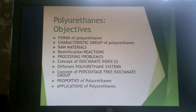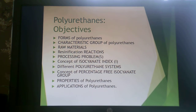First, we're going to state some objectives. We're going to talk about the forms of polyurethanes, the characteristic group of a polyurethane — which is, spoiler, a urethane — raw materials, resinification or polymerization reactions, processing challenges, the concept of isocyanate index, different polyurethane systems, the concept of free isocyanate groups, the properties of polyurethanes, and applications.